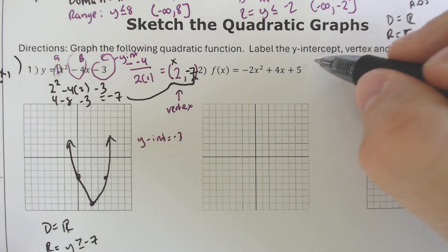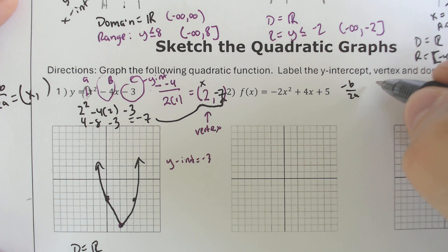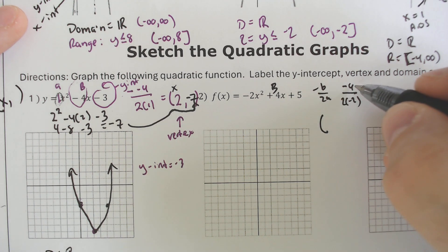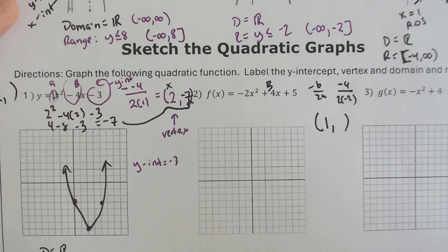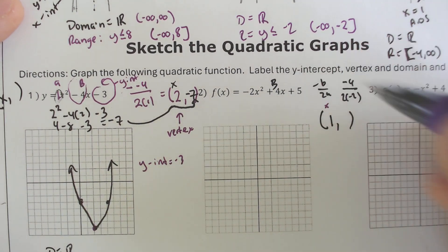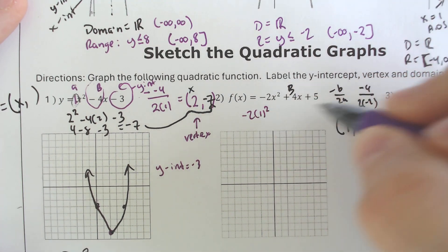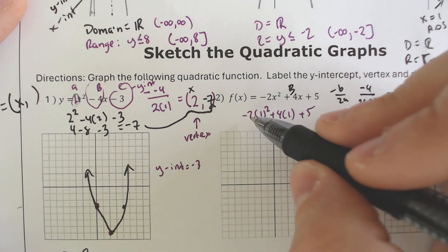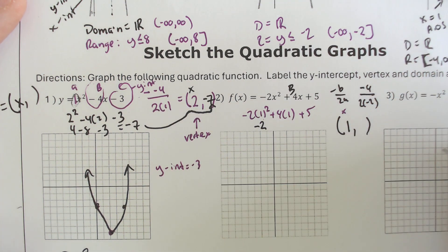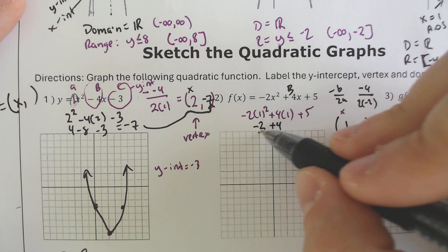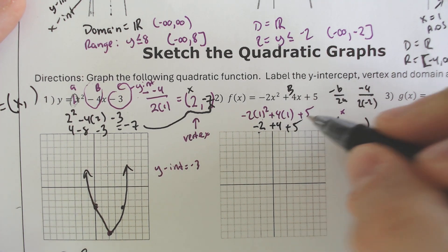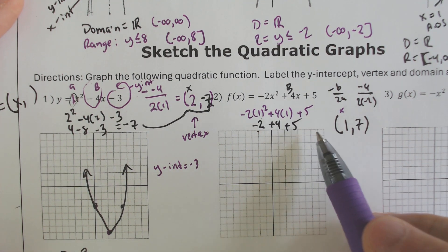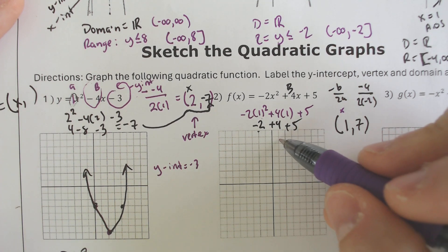Let's do another one. Start with negative b over 2a. Negative b over 2a will end up being negative 4, because b is positive 4, over 2 times negative 2, ends up being negative 4 divided by negative 4, which is positive 1. Once you get the x-value of your vertex, plug it in to get the y-value. If we plug in that x-value, we end up with negative 2 times 1 squared plus 4 times 1 plus 5. See how they're half of one another and opposite signs, plus 5 — if we add all these together, you get positive 7.